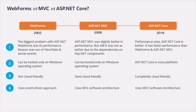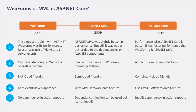ASP.NET Webforms follows an event-driven development approach — for example, if the user clicks a button on the UI, it fires a click event on the server. But ASP.NET MVC and ASP.NET Core both follow MVC architecture. In ASP.NET Webforms, there is no support for dependency injection. In ASP.NET MVC, you can add dependency injection optionally, but ASP.NET Core has built-in support for dependency injection.